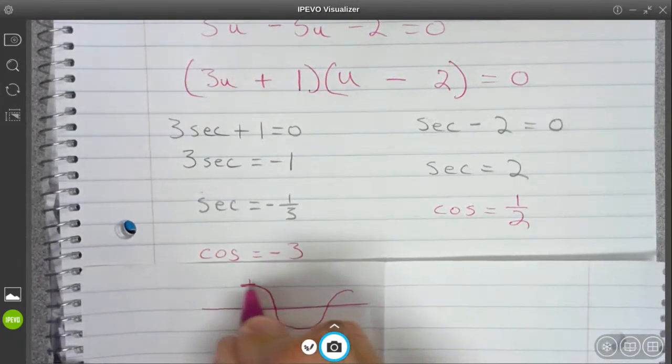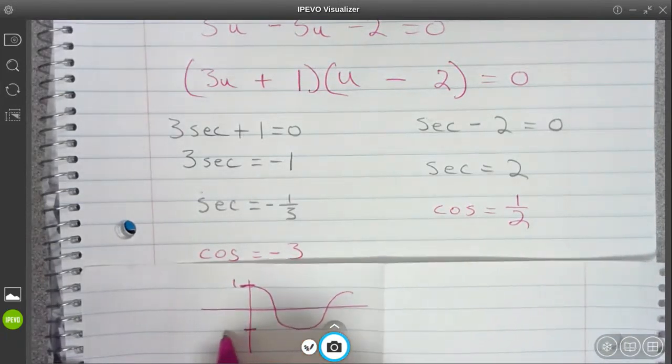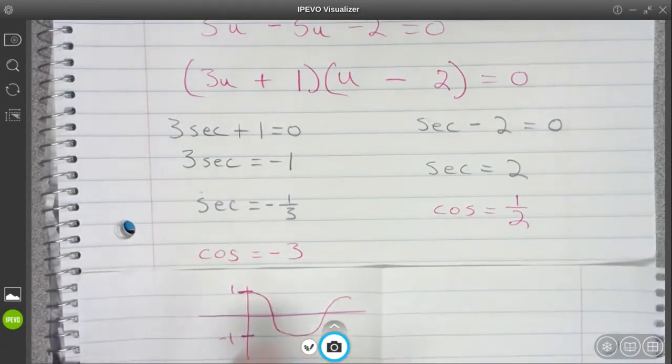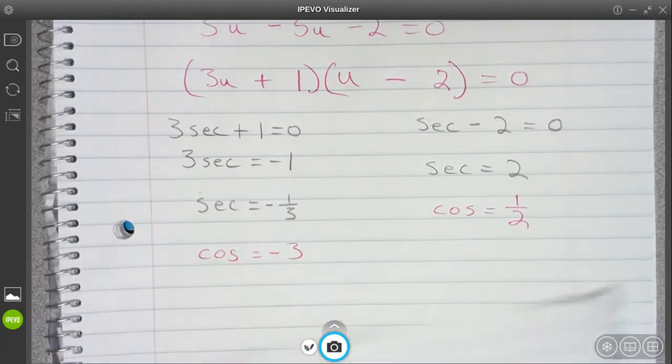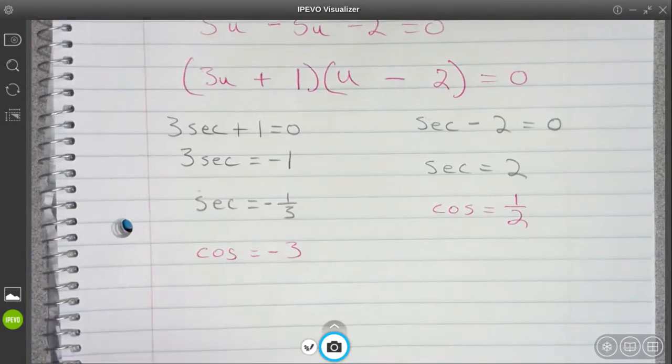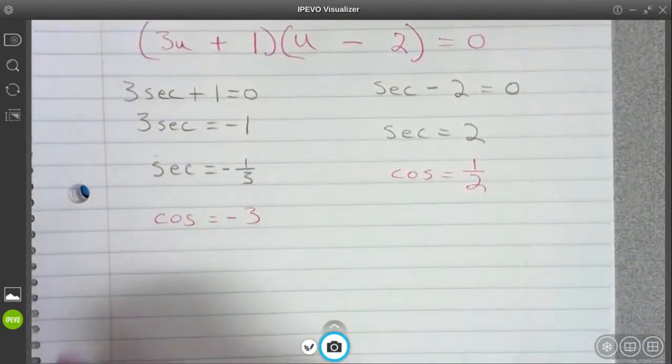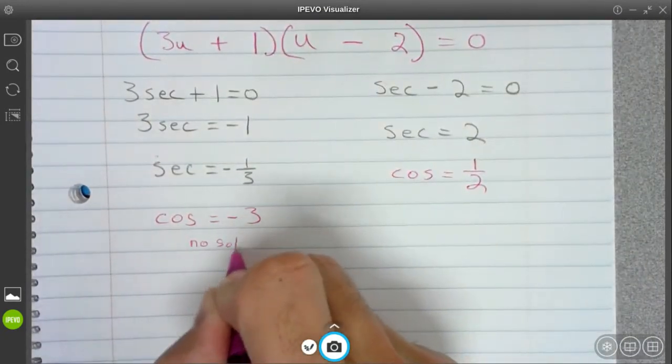The highest it ever gets to is a 1. The lowest it ever gets to is a negative 1. So it never actually reaches a negative 3. So this one, not going to happen. I guess you could put no solution for that part.